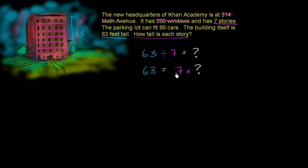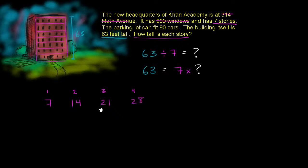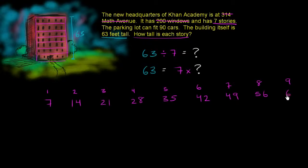To do that, I'm just going to skip count by seven. Seven times one is seven. Seven times two is 14. Seven times three is 21. Seven times four is 28 — notice I'm just adding seven each time. Seven times five is 35. Seven times six is 42. Seven times seven is 49. Seven times eight is 56. Seven times nine is 63.